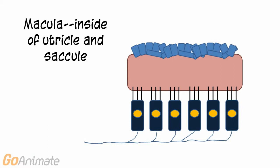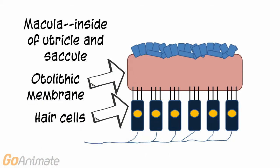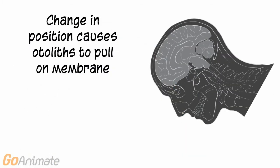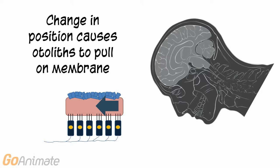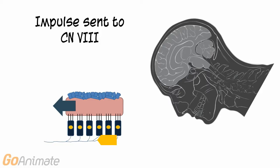Here is a more detailed picture of the macula. The macula contains a membrane called the otolithic membrane, and hair cells are connected to the membrane. A series of small crystalline structures called otoliths sit on top of the membrane. When the head changes position, the otoliths pull on the membrane, causing the tiny stereocilia on the hair cells to bend. The bending of hair cells is converted to impulses that travel to cranial nerve 8 and to the brain for processing.